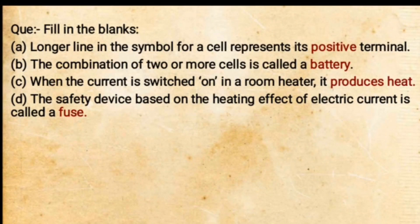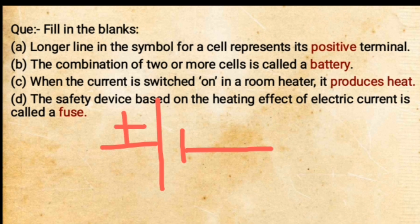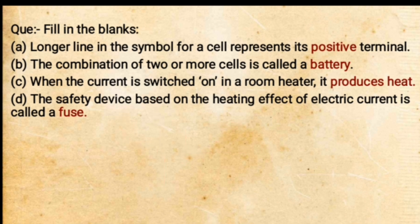Next question is fill in the blanks. The first one: the longer line in the symbol for a cell represents its blank terminal. The cell symbol has a longer line and a shorter thick line. The correct answer is: positive terminal. Next — the combination of two or more cells is called a battery.